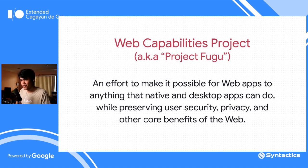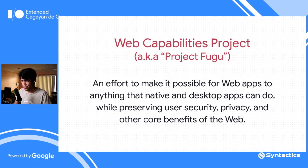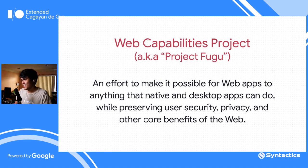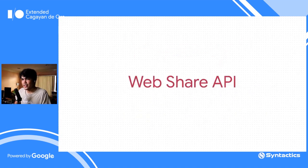Project Fugu preserves the core benefits of the web such as user security, privacy, and how easy it is to share links. It's not one technology or API, not a library — it's an umbrella term for a lot of web APIs. We'll be talking about the individual APIs that make up the Project Fugu umbrella, specifically five or six of them that can be added with small additions to our websites but greatly enhance user experience.